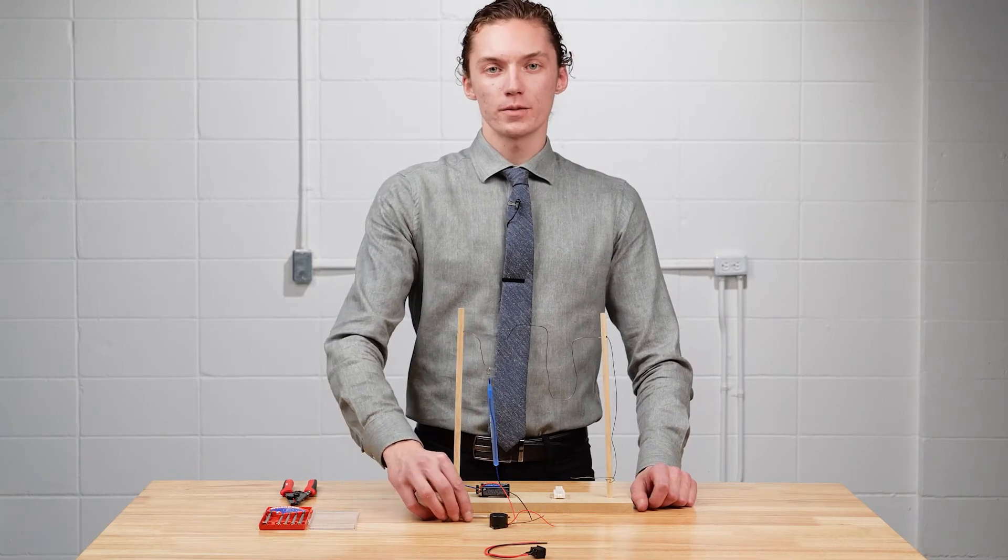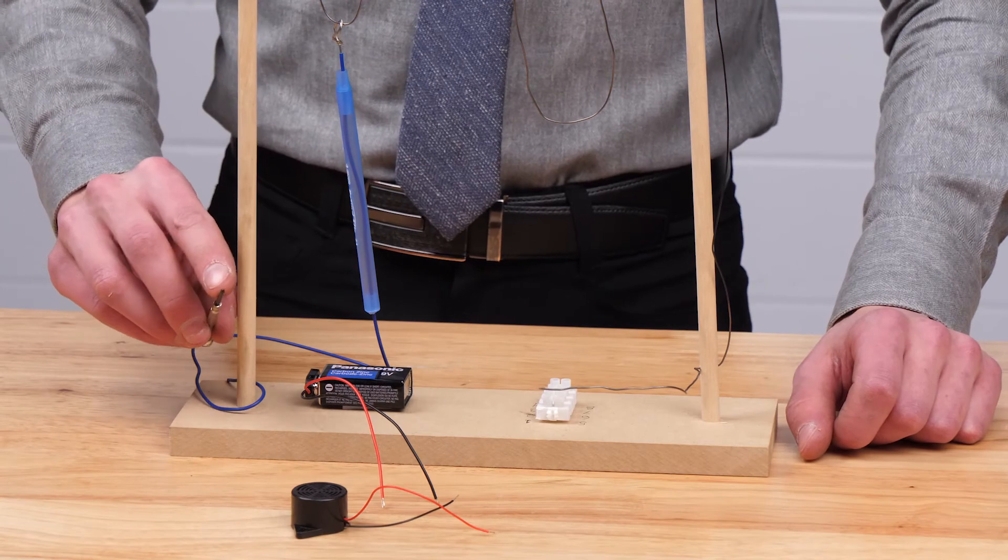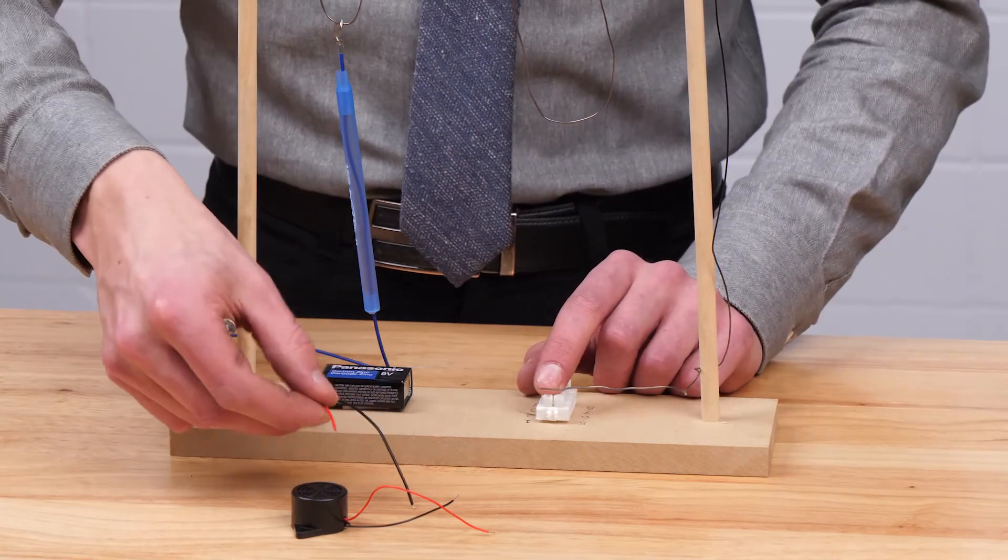To attach the wires to the connector, we'll be using our mini Phillips screwdriver, which is shaped like a cross, to screw down the connectors once we have inserted our wires.